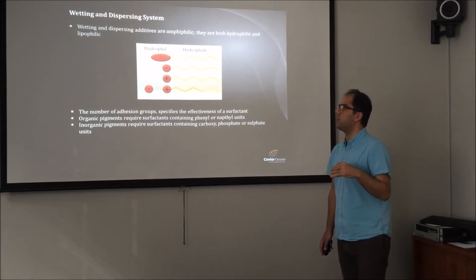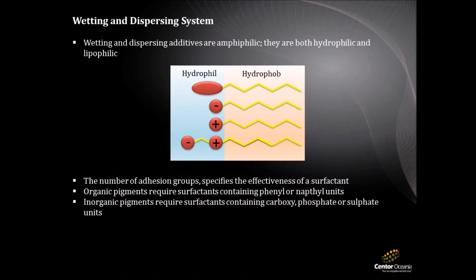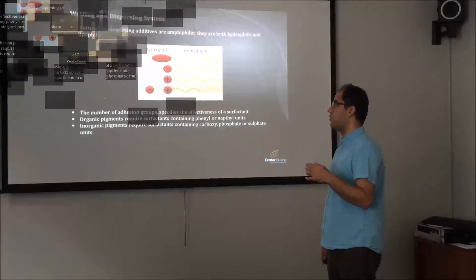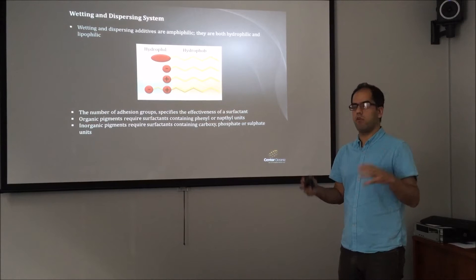I reviewed and summarized the main components of the seed coating formulation. Initially, the wetting and dispersion system: wetting and dispersing surfactants are amphiphilic — they are both hydrophilic and lipophilic. This means they are molecules which show a varying degree of solubility in both polar and non-polar environments, so they act as a kind of bridge between these two environments.